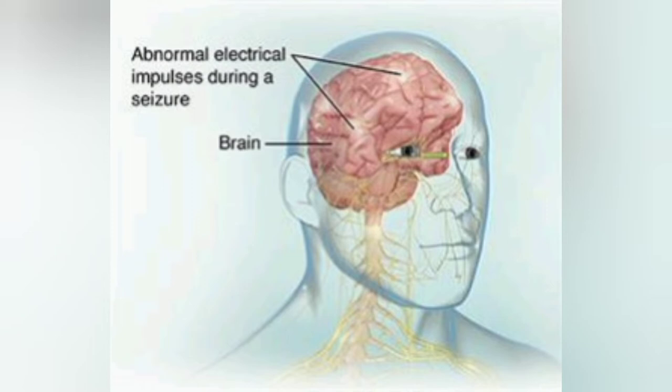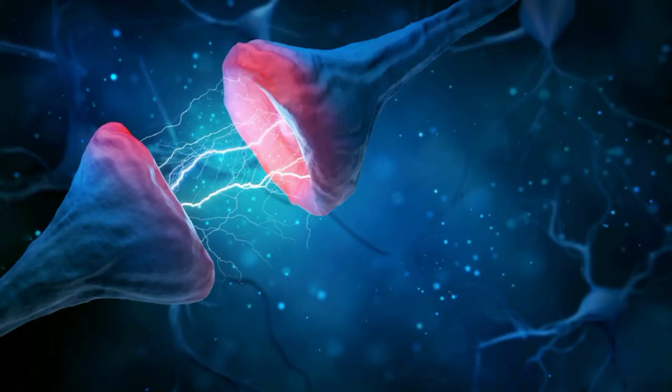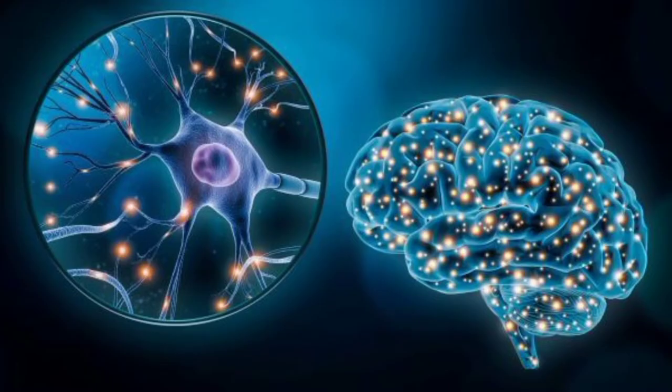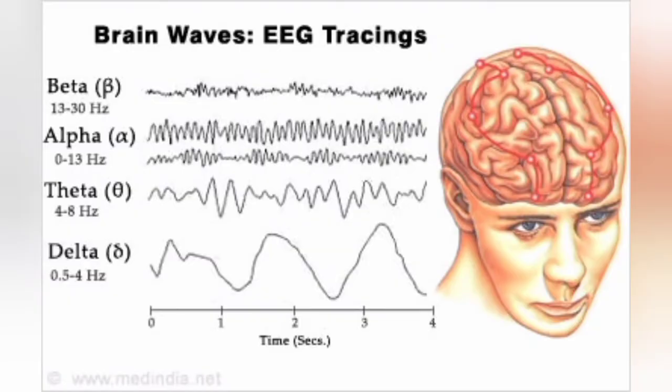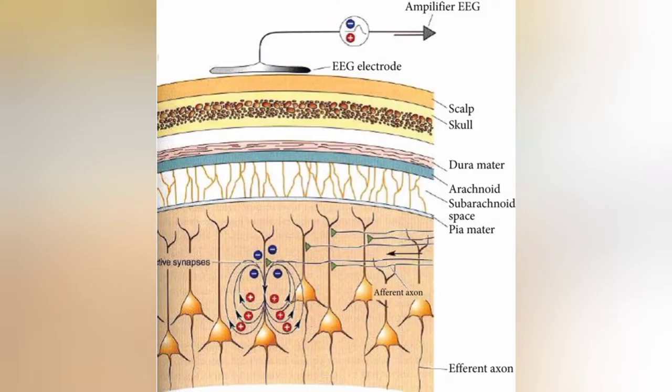Our brain cells communicate through electrical impulses and are active all the time, even during sleep. This activity shows up as wavy lines as shown in the image — that is the EEG recording. For this painless test, small sensors are attached to the scalp to pick up the electrical signals produced by the brain.